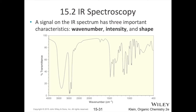When reading an IR spectrum, we look at three main characteristics of each peak. First, the wave number — where on the x-axis is our peak showing up. Second, the intensity — how deep are these peaks? We might see very strong peaks versus very weak peaks. Third, the shape — are they very sharp peaks or kind of rounded, very broad peaks?